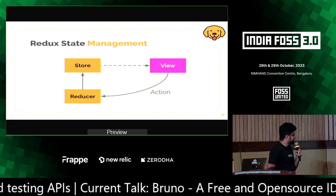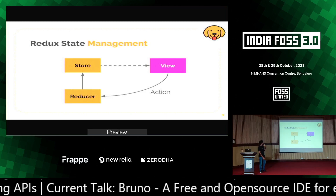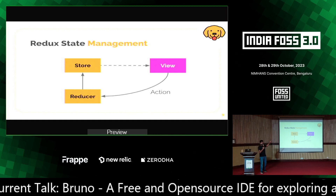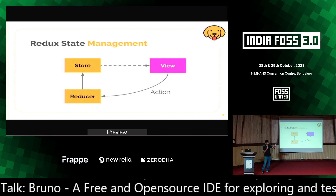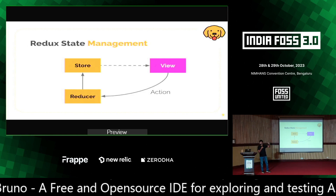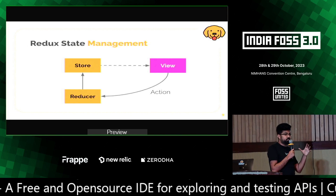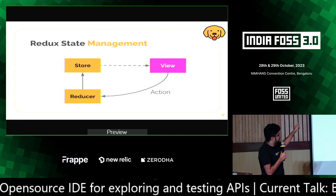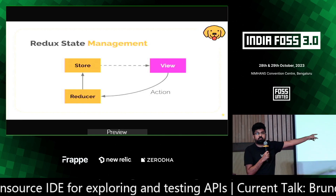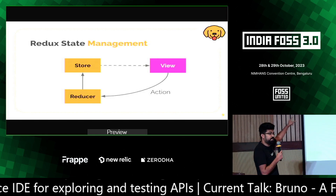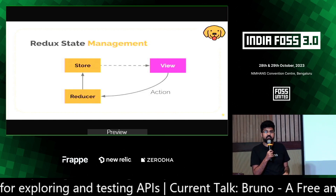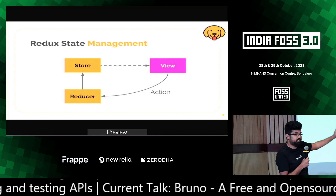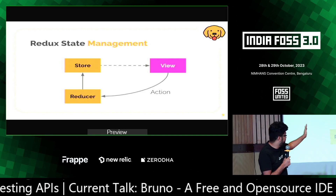Let's get into some architecture bits of Bruno. Front-end developers will know this: in a typical Redux state management, you have a view, and any time a view wants to change, you dispatch an action. The action gets picked up by the reducer. The reducer takes your old state, reduces it to a new state, and puts it back in the store. Your view just reflects the store. React means it reacts to the store — it's always a representation of the store.